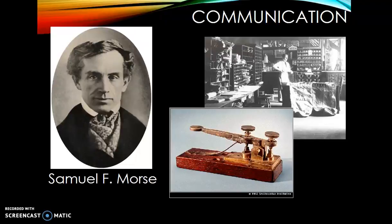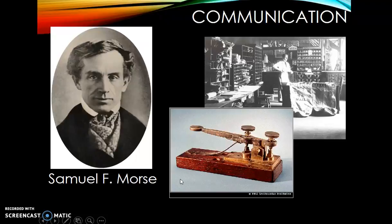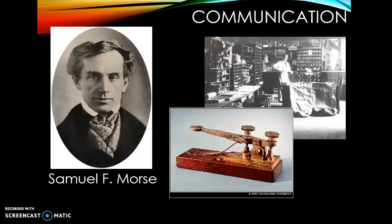Samuel Morse invents the telegraph — a machine that sends messages through electrical wires. You tap a key in a series of dashes and dots — that code is called Morse code, invented by Samuel Morse. The telegraph makes communication instant: no more taking months to get a message to someone. Thanks to the telegraph, we can notify someone immediately, even very far away.